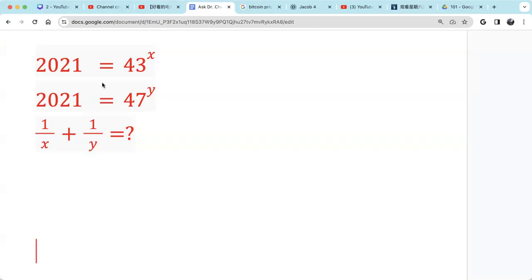Let's see this question. So given two conditions, we're given 43 raised to x equals 2021 and 47 raised to y also equals 2021. And we are asked to find 1 over x plus 1 over y.